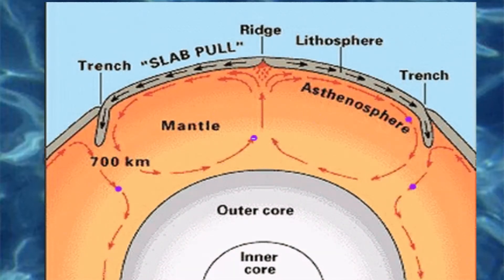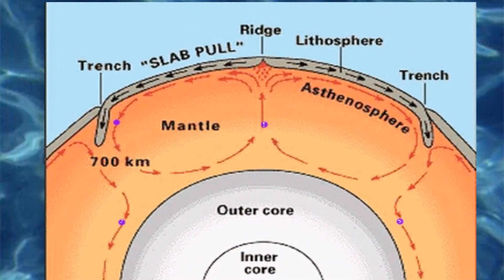Plate movements cause great changes in Earth's crust. Most major earthquakes, volcanoes, and mountain ranges appear where tectonic plates meet.